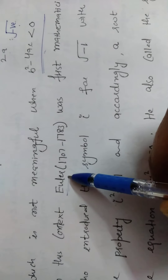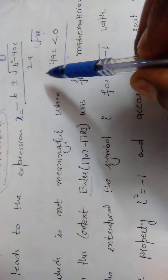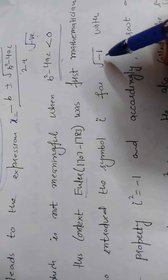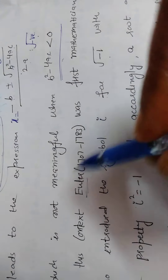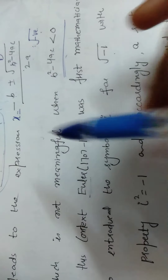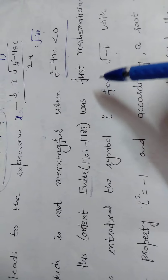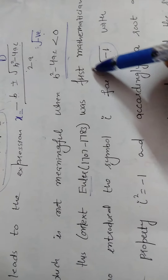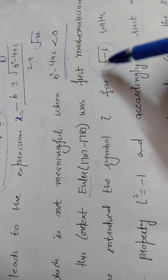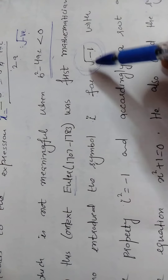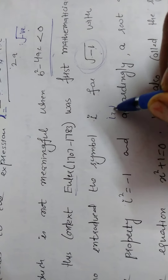The first mathematician to deal with these equations was Euler. He used the symbol iota for the square root of minus 1, because the expression under root of minus 1 was appearing again and again in his equations. To avoid writing it every time, he set a symbol for it: that symbol is iota.